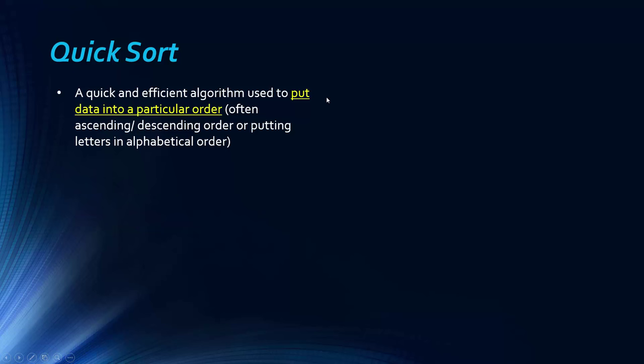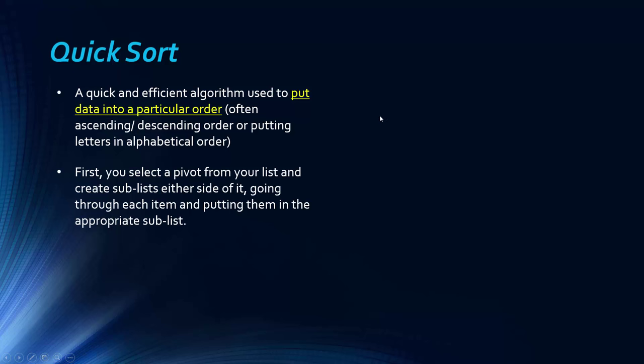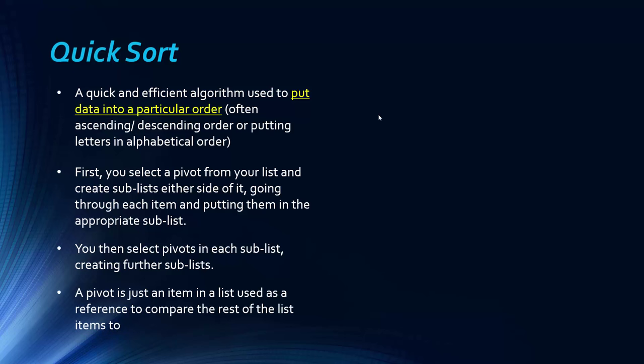So a quicksort algorithm is a quick and efficient algorithm used to put data into a particular order. That's what sorting algorithms do. Usually we're talking about lists going into ascending or descending order if they're numbers, or alphabetical if they're letters. So what you do with quicksort, you select a pivot from your list, and you create sublists either side of it. And you go through each item and put them in the appropriate sublist. So you compare it to the pivot and move it if you need to. You then select pivots in each sublist, creating further sublists. And then a pivot is just an item in the list used as a reference point to compare the rest of the list to.